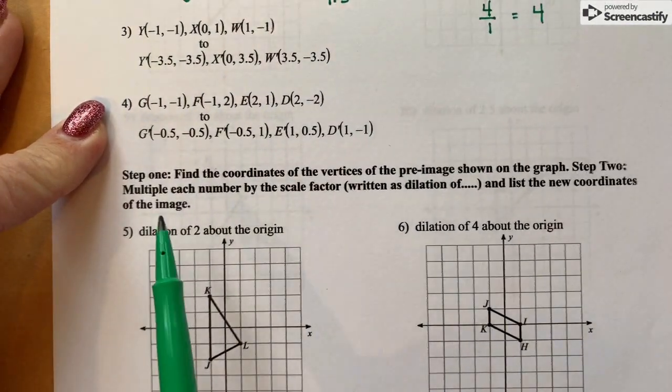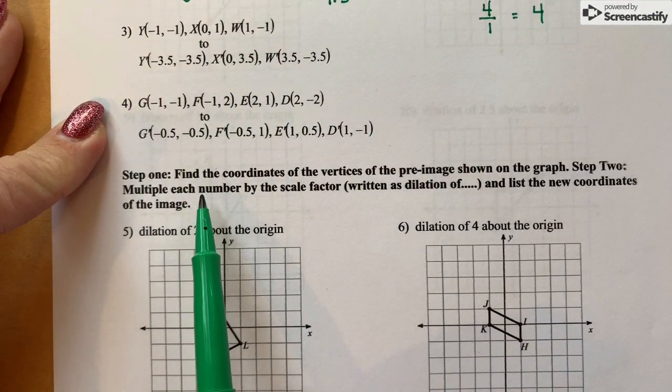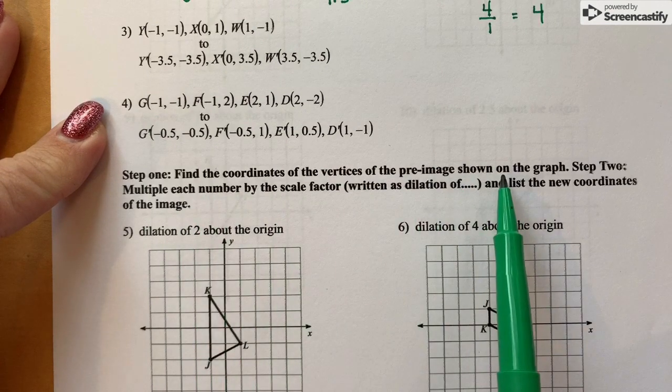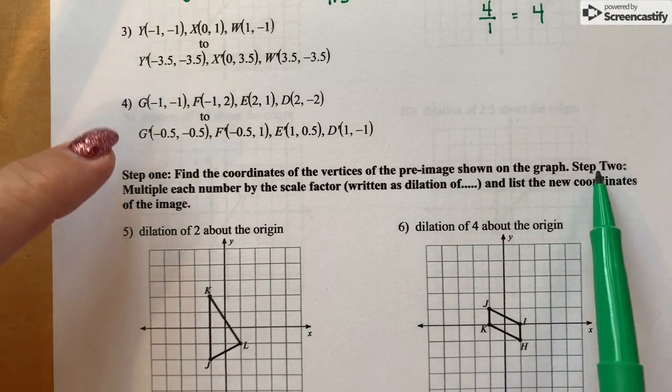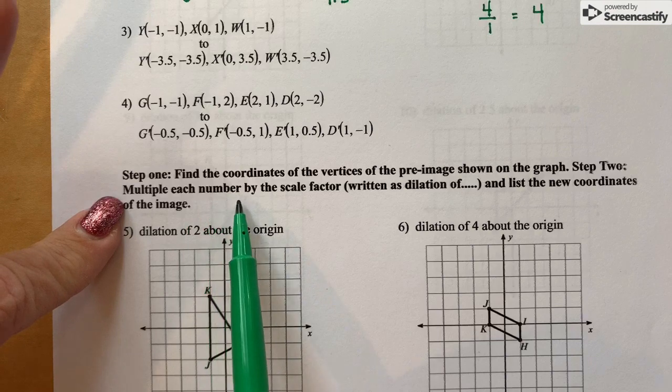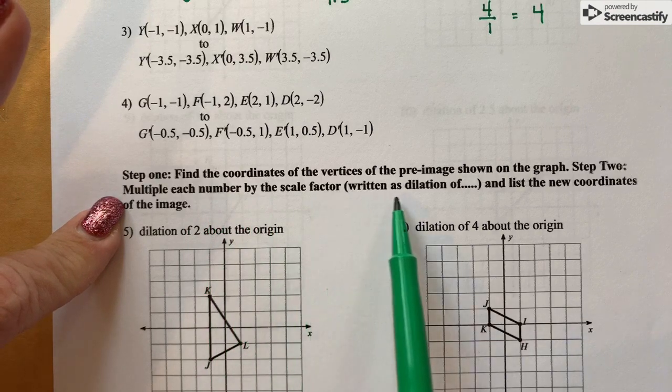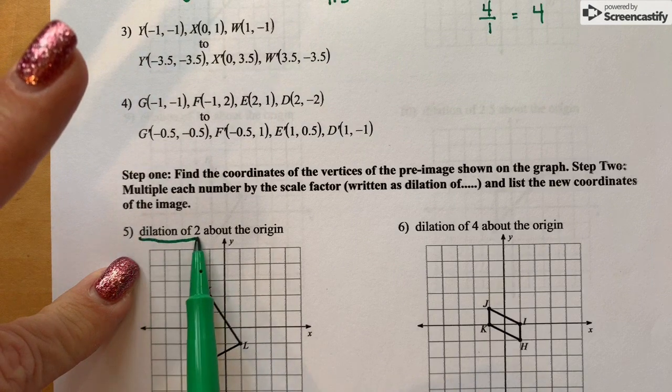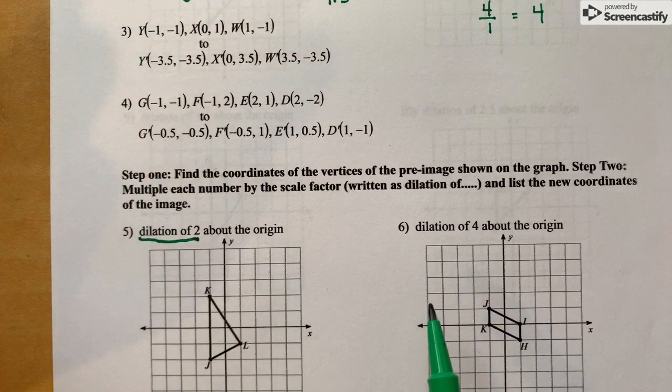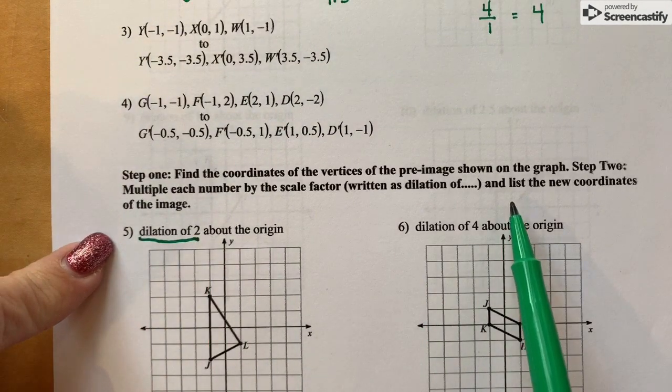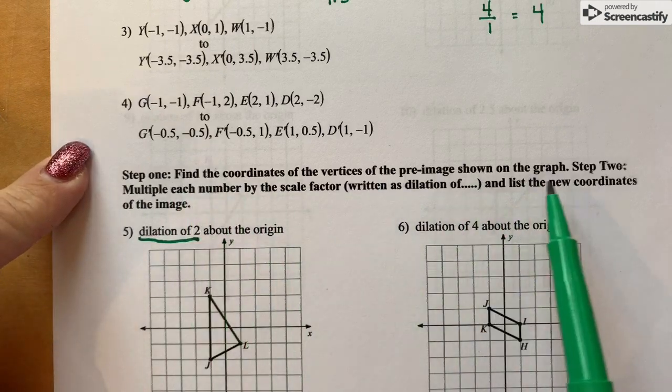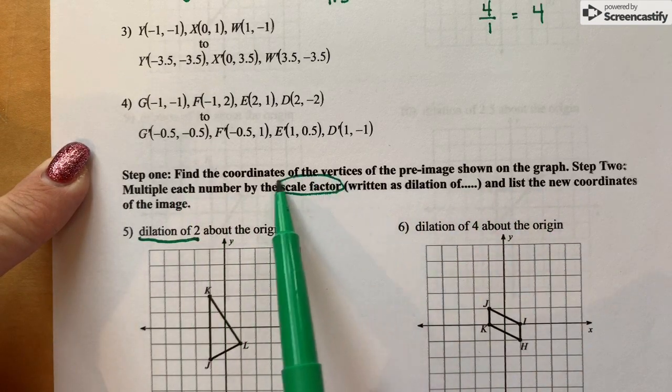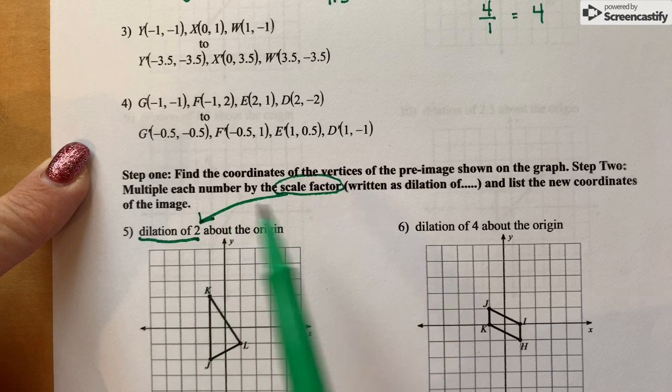In this one, find the coordinates of the vertices of the pre-image shown on the graph. Step two is to multiply each number by the scale factor, written as dilation of each problem. So here it is, the dilation of 2 is the same as a scale factor. So scale factor 2.